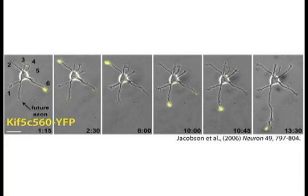In 2006, Neuron published a very interesting paper on a truncated kinesin. This construct during the stage two phase shows an oscillatory behavior where it transiently accumulates in different stage two neurites, moving within the cell. Eventually it stabilizes in one neurite, and this extends to form the axon.